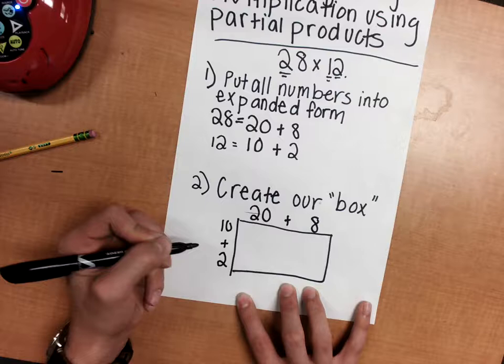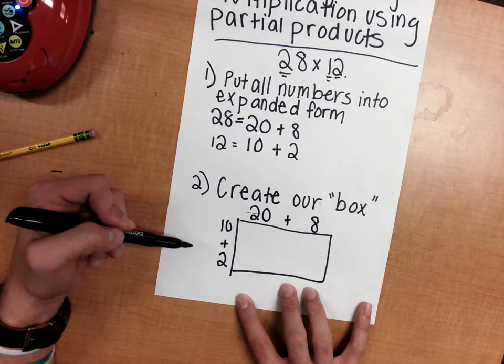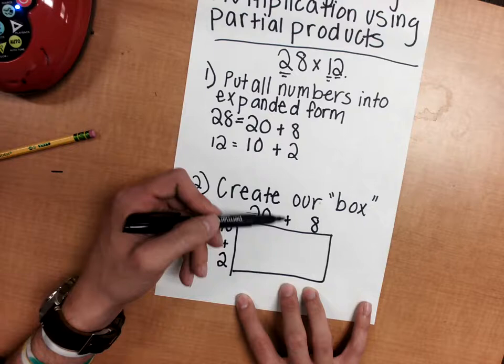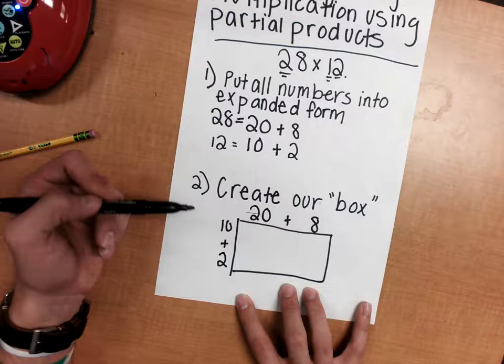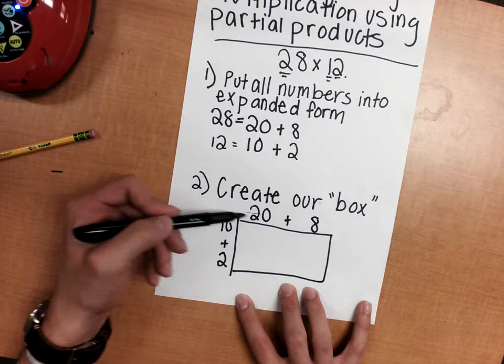In partial products, what we're really doing is multiplying each place value by the others. I want to make sure that when I create my box, it's separated so I know what place values I'm multiplying at one time. When we're creating the box, if I see an addition sign on top,